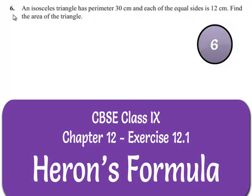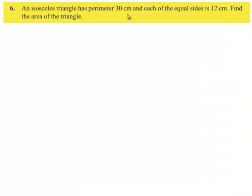Now let us move on to the 6th question. An isosceles triangle has perimeter 30 cm and each of the equal sides is 12 cm. Find the area of the triangle.